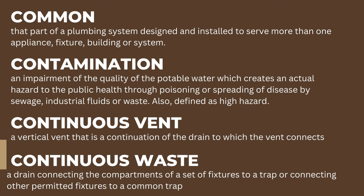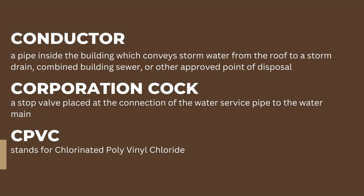Continuous vent: a vertical vent that is a continuation of the drain to which the vent connects. Continuous waste: a drain connecting the compartments of a set of fixtures to a trap or connecting other permitted fixtures to a common trap. Conductor: a pipe inside the building which conveys storm water from the roof to a storm drain, combined building sewer, or other approved point of disposal.